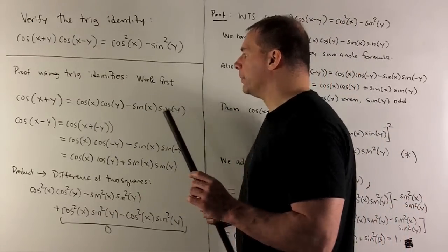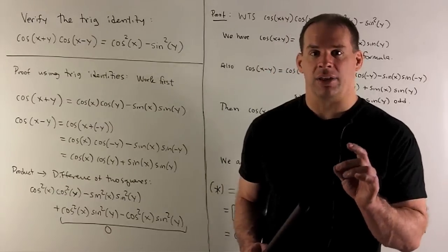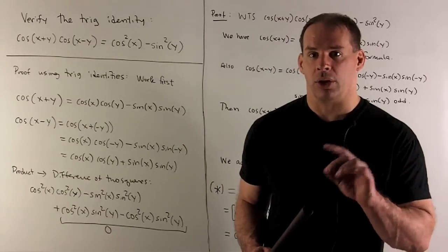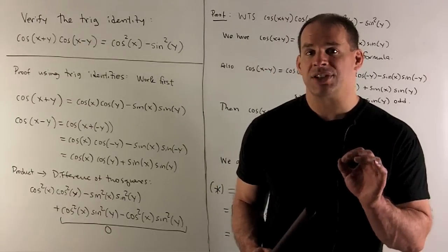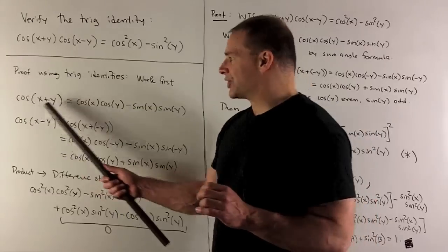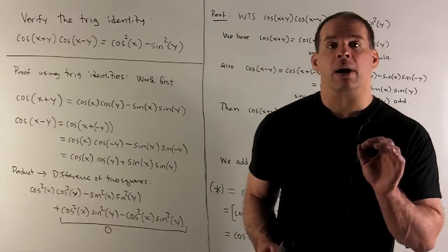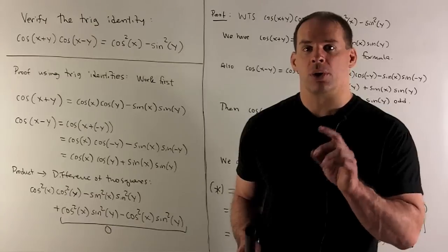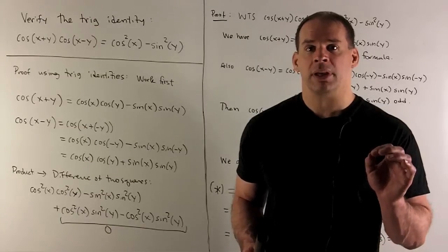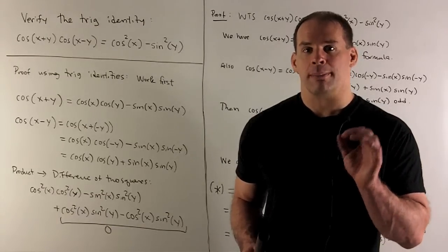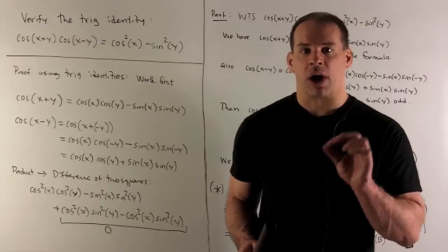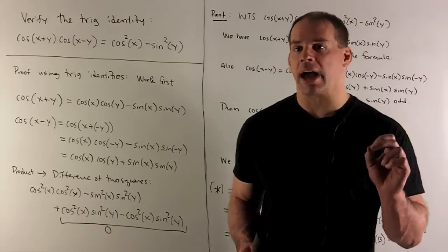So, I'll write that out. For the difference, again, either I have it memorized or I look it up. In this case, if I have the sum, I'm halfway there. So, again, we can use cos cos minus sine sine, except instead of y, I'm going to use minus y. So, instead of x minus y, I write x plus minus y.